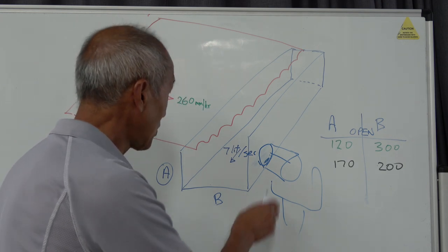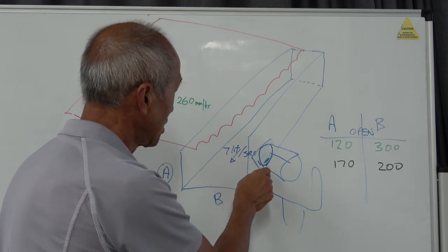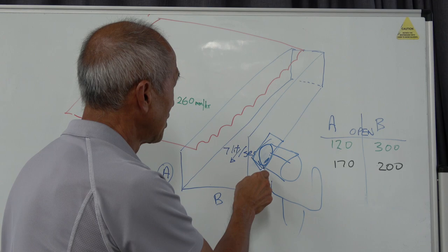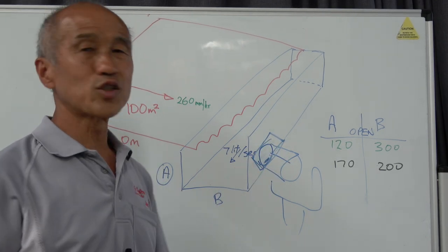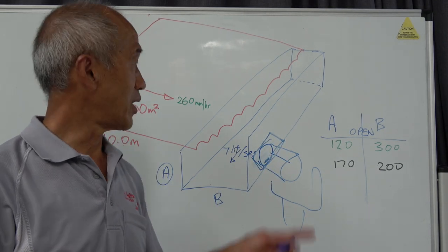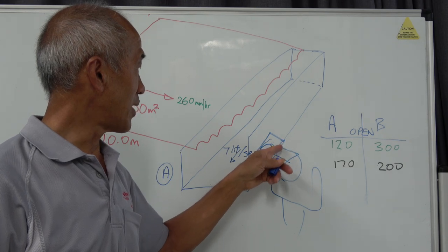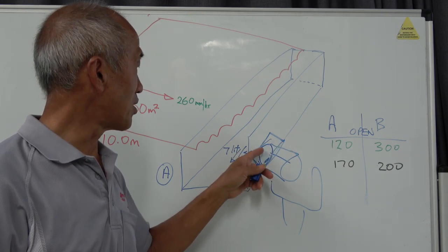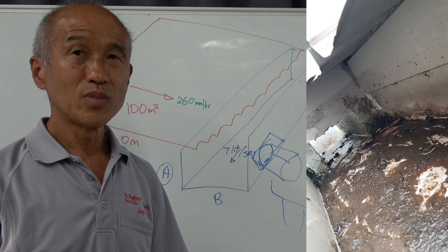So that's what you should be looking at: a rectangular outlet at the base of the box gutter draining into a rain head. If you haven't got that, you've got problems.